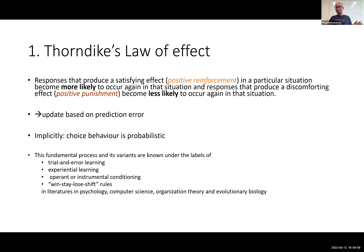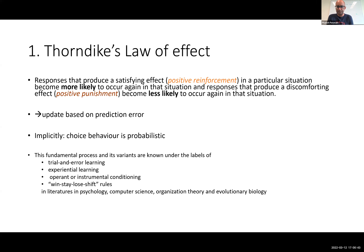If your beliefs are not accurate, you don't want to be fully maximizing. You want to be probabilistic in your maximization to allow for some chance of learning about things you currently have poor beliefs about. This fundamental process of reinforcement learning is also known as trial and error learning, experiential learning. Psychologists call it operant or instrumental conditioning. Animal behavior folks call it the win-stay, lose-shift rule: if you win you stay, if you lose you go. It's all driven by the same underlying point — prediction error and update based on that.